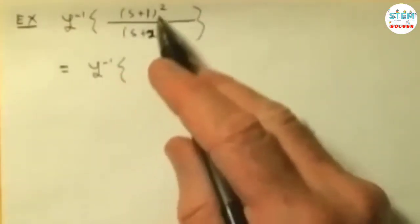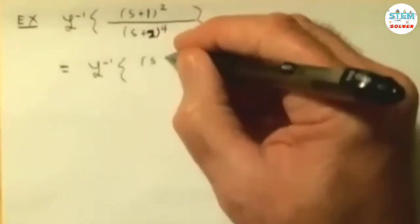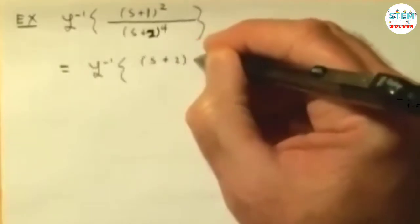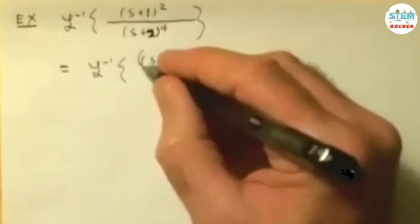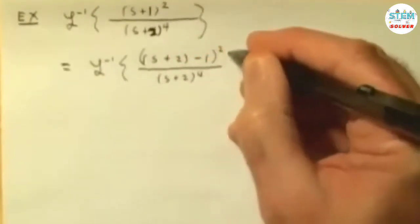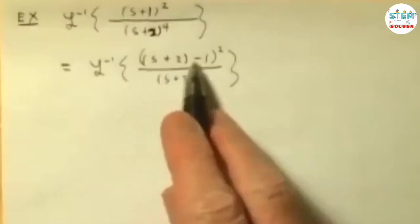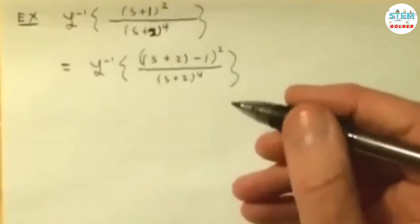Here's what I would do. I would love that to be s plus 2, because then they would cancel, right? So what I would do is write this s plus 2 minus 1, which might seem a little convoluted at first, but it's not. I still have s plus 1 here, right? I just wanted a plus 2, so I had to subtract a 1.